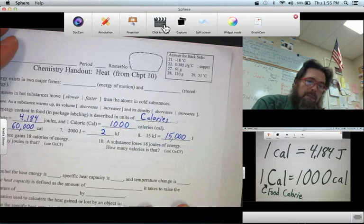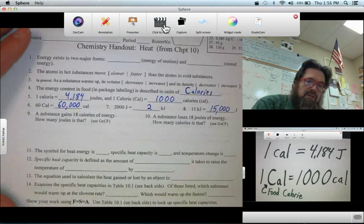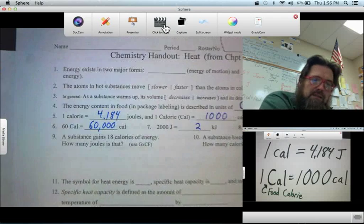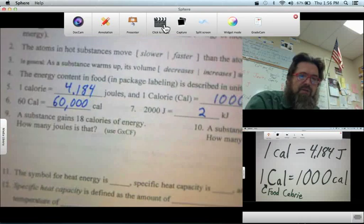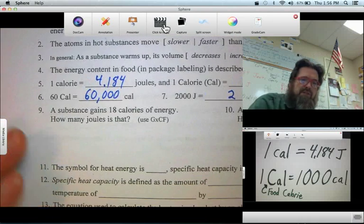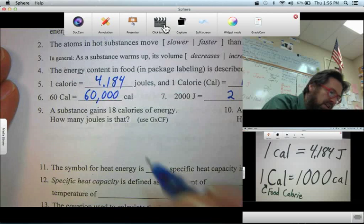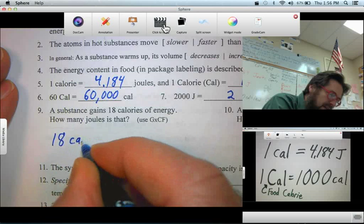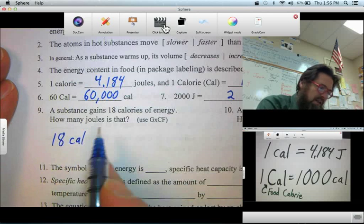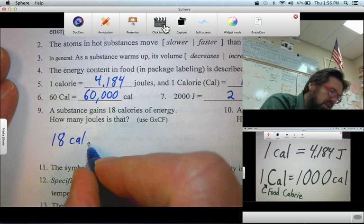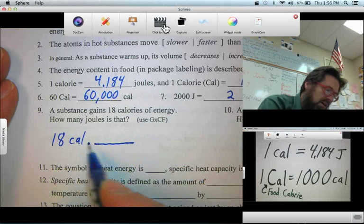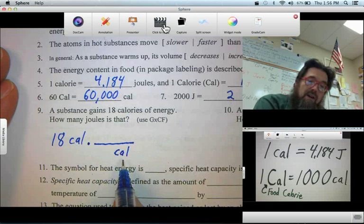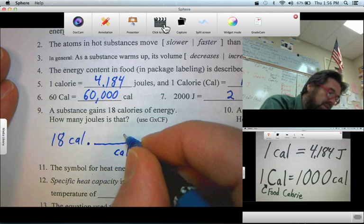All right, now, one of my favorite things, conversions. A substance gains 18 calories of energy. How many Joules is that? Well, this is our standard given times conversion factor. So, we write our given 18 little c calories, and we want to convert to Joules. So, tiny dot, horizontal line. On the bottom, we write the units we're going to get out of. Cancel. Calories over calories will cancel. We want to get into Joules.